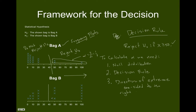To calculate beta, I switch to the alternate distribution and think about how we would make a Type 2 error. The $1, $5, $10, and $20 bills are the values that would cause a Type 2 error. So beta is 10 out of 21 — that would be the Type 2 error rate.